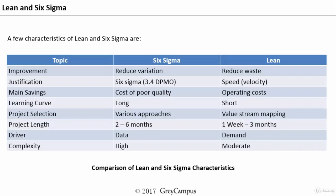The learning curve is quite long in Six Sigma because people have to be exposed to a lot of statistical tools and processes. Whereas the learning curve for Lean is very short because these are mostly a common sense approach, so Lean projects can be implemented with a shorter learning curve.